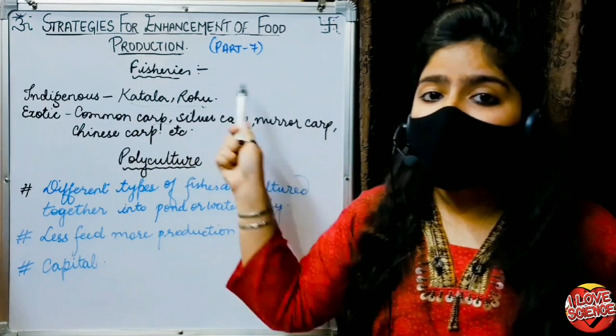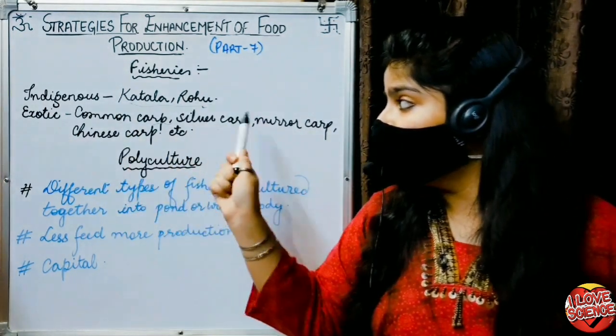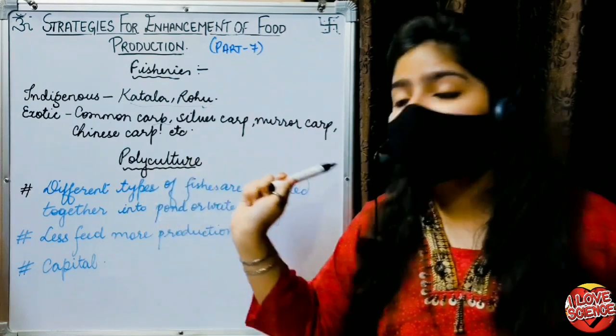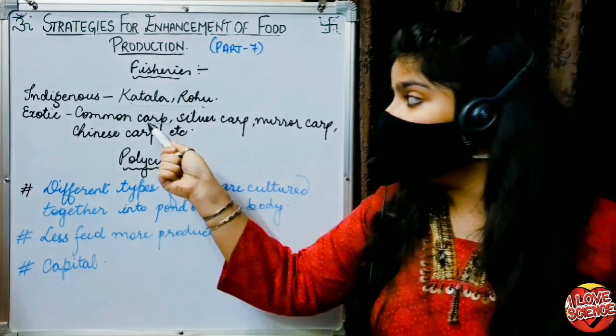Indigenous examples: Catla and Rohu — very easily available. Exotic species include Common Carp, Silver Carp, Mirror Carp, and Chinese Carp.